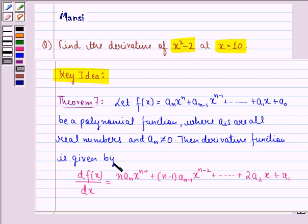Then the derivative function is given by df(x)/dx is equal to n·aₙx raised to power n minus 1 plus (n-1)·aₙ₋₁x raised to power n minus 2 and so on till 2a₂x plus a₁.